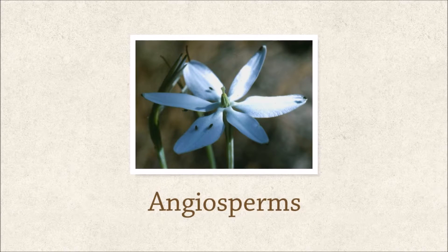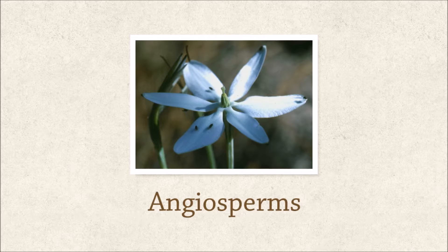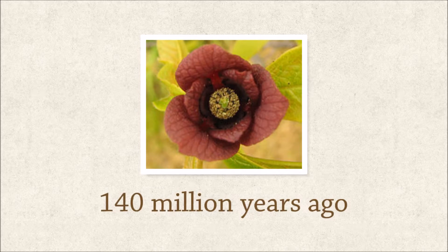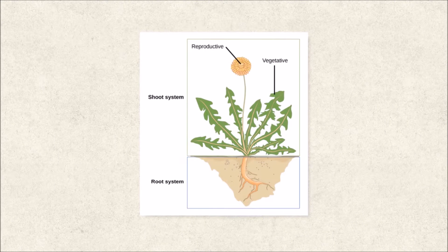Afterwards, angiosperms evolved from the first vascular plants. Angiosperms are flowering seeded vascular plants. They also have improved fertilization success. An example of early angiosperms are magnolids. They appeared around 140 million years ago.